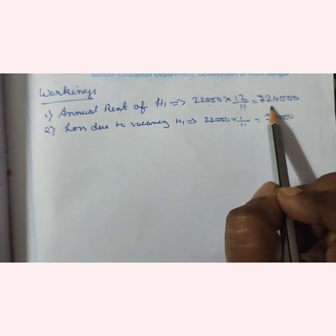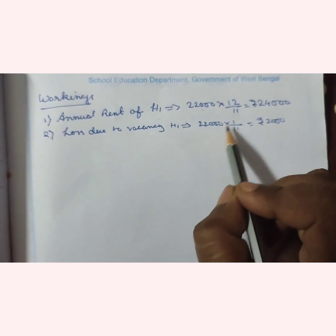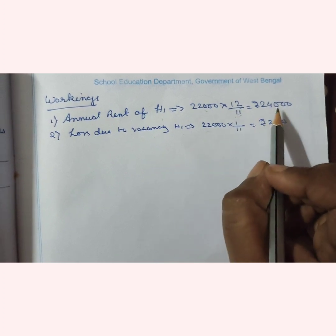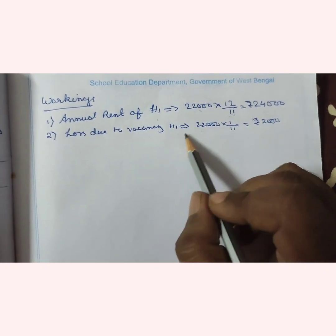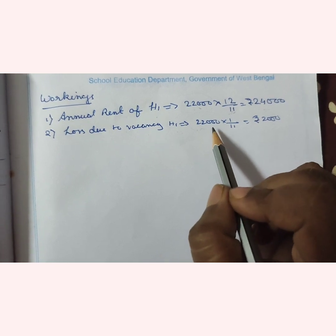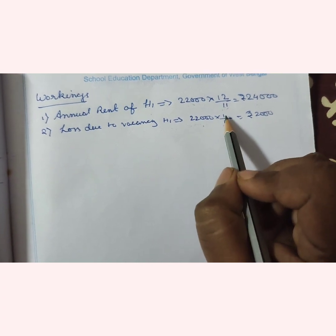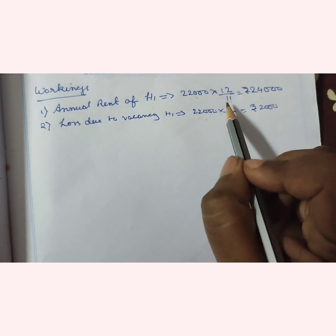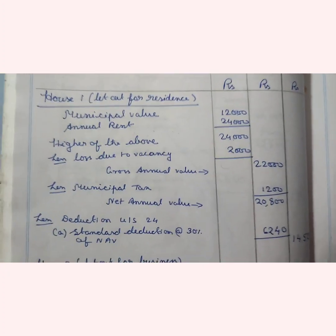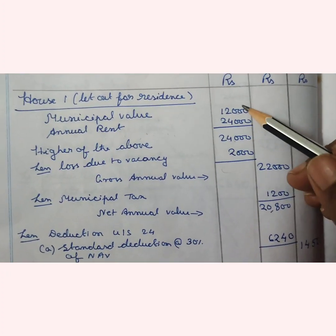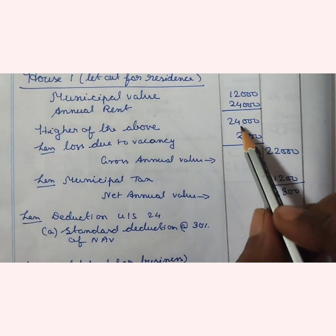You will get ₹24,000 as annual rent. Loss due to vacancy is also required. You can deduct ₹22,000 from ₹24,000 to get ₹2,000 as vacancy loss. Another way: ₹22,000 is the rent received for 11 months, and multiplying by one month gives ₹2,000 as vacancy loss. These are two workings for the vacancy loss of ₹2,000.